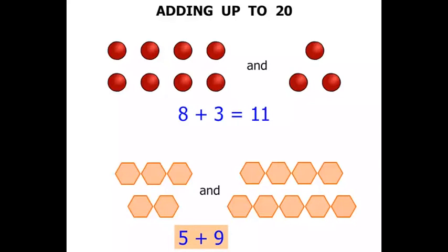So now what is 5 plus 9? Well let's count them all together. 1, 2, 3, 4, 5, 6, 7, 8, 9, 10, 11, 12, 13, 14. So 5 plus 9 equals 14.